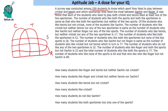It was found that each of the students who like to play both cricket and tennis liked at least one of the two sportsmen. Both cricket and tennis means the common part, and each of these liked at least one sportsman. This means the portion of only cricket and tennis — with no sportsman — will be zero.